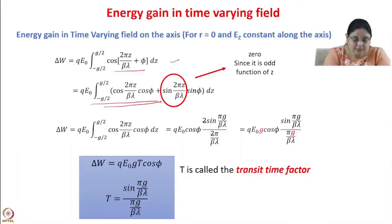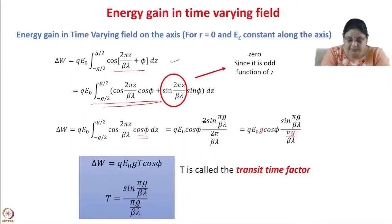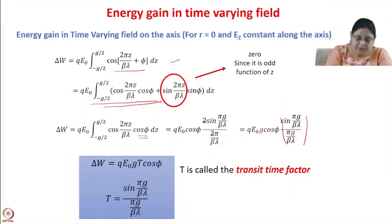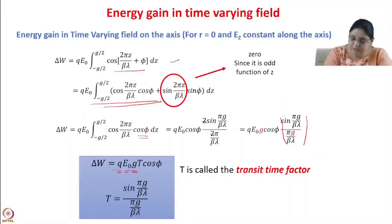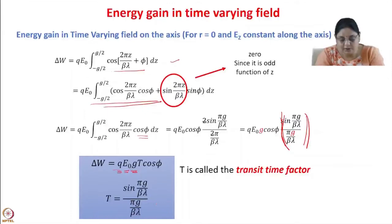Integrating the remaining term, cosφ is independent of z so it comes out of the integral. Integrating cos(2πz/βλ) and applying the limits, we get QE₀cosφ times 2·sin(πg/βλ) divided by (2π/βλ). The factor T = sin(πg/βλ)/(πg/βλ) is called the transit time factor.